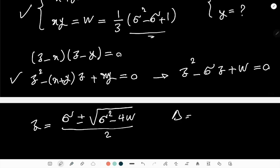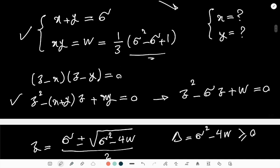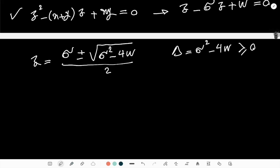So delta is basically σ² - 4w, this must be greater than or equal to zero. And I'm just going to replace w which I have based on σ in that equation. Then I get basically σ² - 4/3(σ² - σ + 1). This must be greater than or equal to zero.